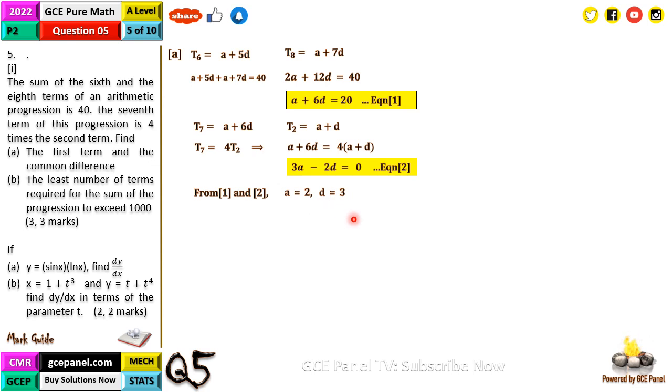Now the part b of the equation says find the least number of terms required for the sum of the progression to exceed 1000. So the sum needs to exceed 1000. And how do we get the sum of the first n terms of an AP? This is given by n over 2 into 2a plus n minus 1d, and that should be greater than 1000. Here our d is 3 and our a is 2. So we substitute this into this equation and we simplify. So when we simplify, what we have is n over 2 into 3n plus 1 is greater than 1000.